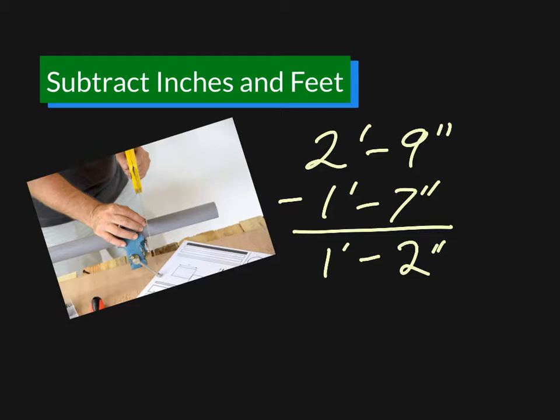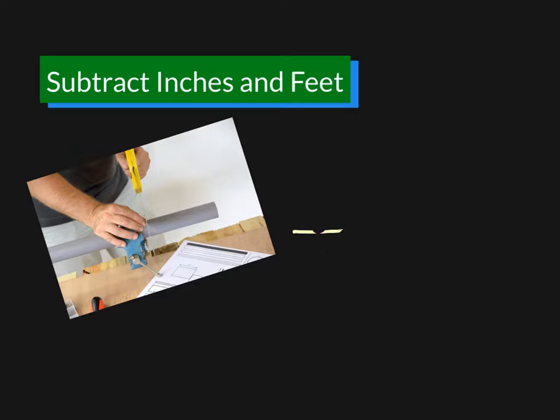Now that's all well and good and pretty simple, but what if the number of inches on the top is smaller than the number of inches on the bottom, and you have to borrow from the feet? For example, let's say we actually have 2 feet 7 inches. That's how long the pipe is and we're cutting off 1 foot 9 inches.